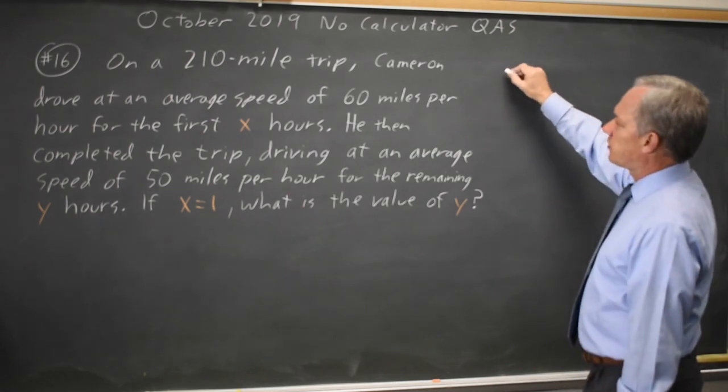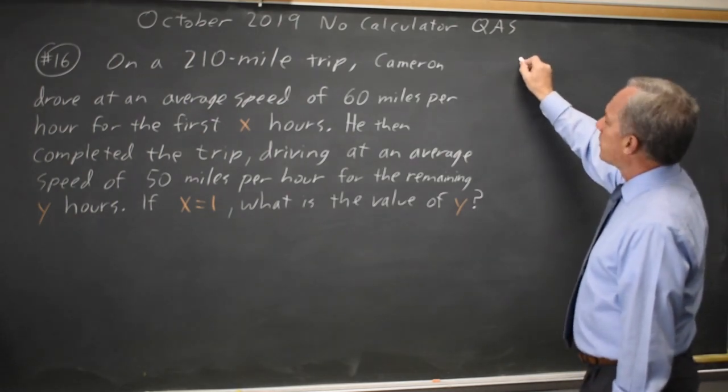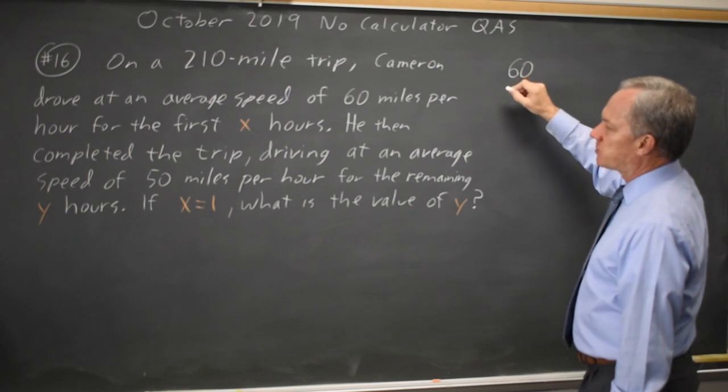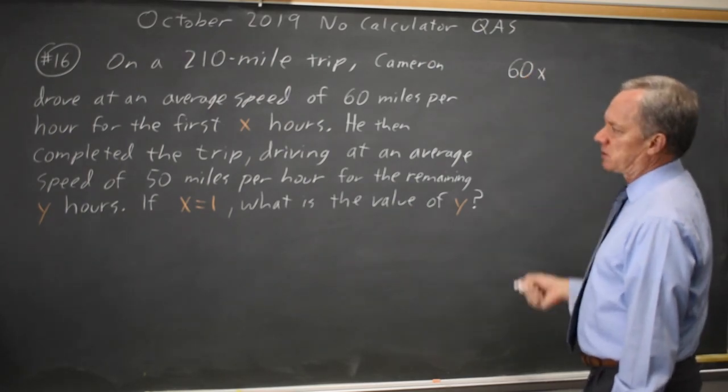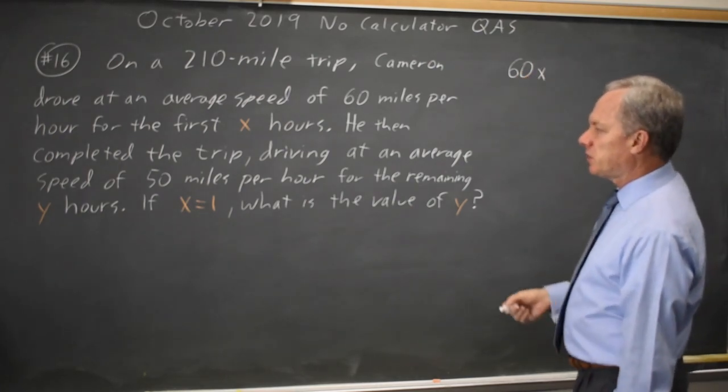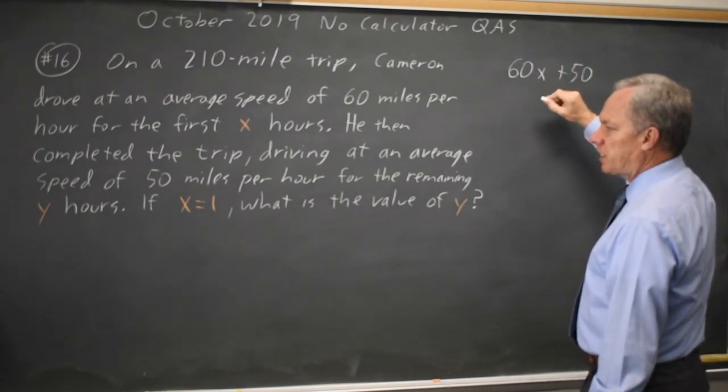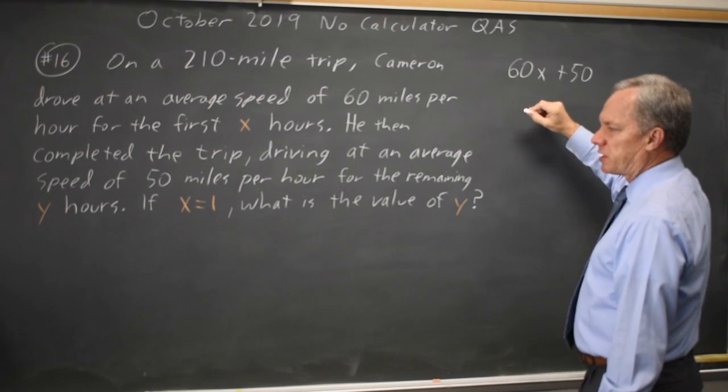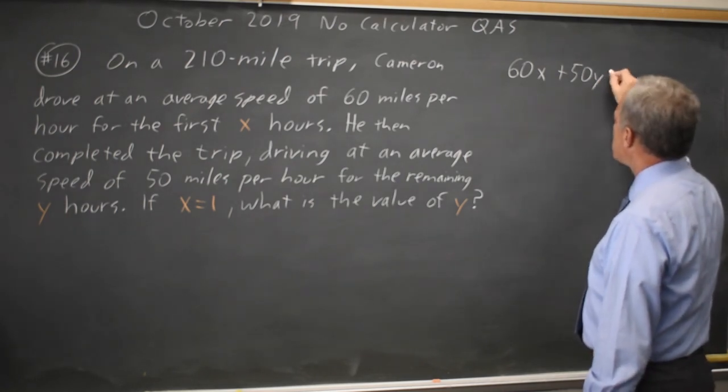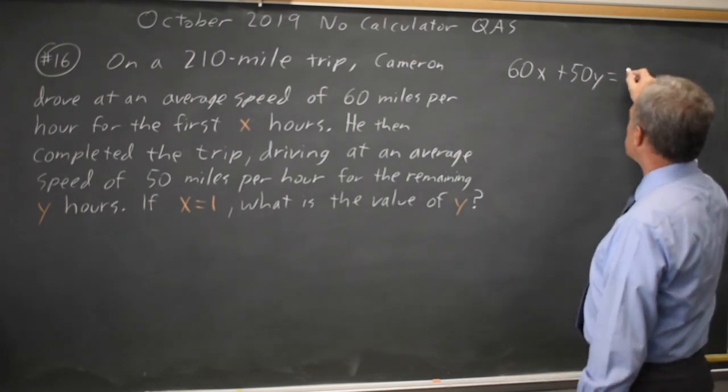So the distance traveled at 60 miles per hour for X hours is 60 miles per hour times X hours, which is 60X miles. Then Cameron completed the trip driving 50 miles per hour for Y hours. Miles per hour times hours gives you miles, so that's 50Y miles. And that's the total trip of 210.